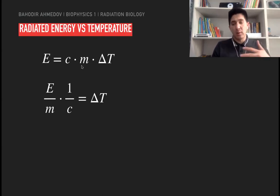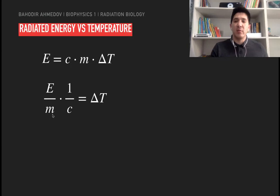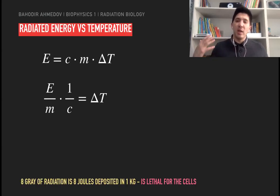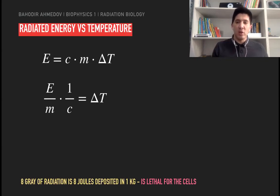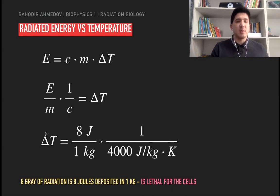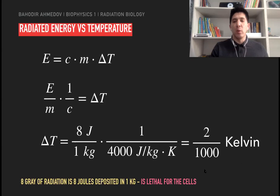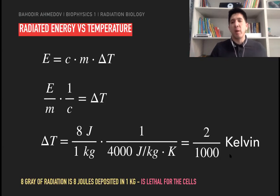The C and M go to the denominator, and energy over mass gives us the radiation dose. For example, if I apply 8 grays of radiation — that is 8 joules applied to one kilogram of material, which is lethal for most cells — the delta T is equal to 8 joules over 1 kilogram times one over 4,000, which is the specific heat parameter for water. This equals 2 over 1,000 kelvins — a two millikelvin change — even when applying a huge dose to the human body.